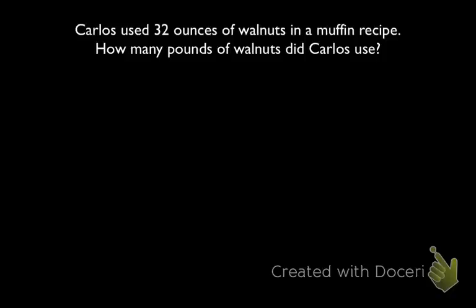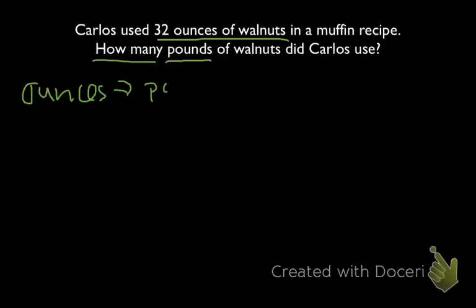Let's look at this problem. It says that Carlos used 32 ounces of walnuts in a muffin recipe. How many pounds of walnuts did Carlos use? He has 32 ounces of walnuts and he wants to change into pounds. We're looking for how many pounds that'll be. The equivalency problem: we're just going to convert, which means that we're changing from ounces into pounds.